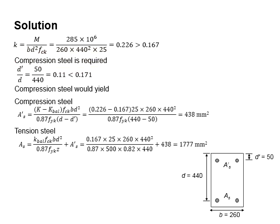Next, you need to determine whether the compression steel bar has yielded. Use the ratio of d' per d, you will obtain 0.11, which is less than the limit of 0.171. From there, you will know that the compression steel bar has yielded.